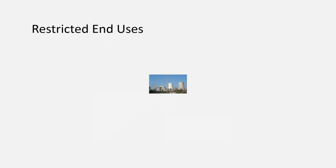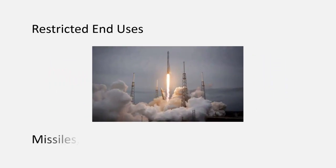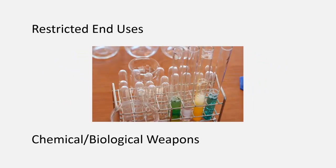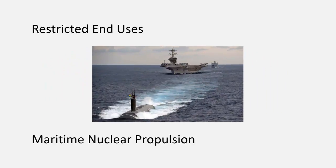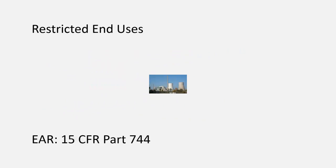Finally, we get to Restricted End-Uses. Items or technology may be restricted based on how they will be used, such as certain nuclear activities, missiles, rockets, unmanned air vehicles, and space launch vehicles, the manufacture or stockpile of chemical or biological weapons, maritime nuclear propulsion, and certain microprocessors for a military end use. There are too many variables to go into these very deeply, so I will just refer you to the Export Administration Regulations 15 CFR Part 744.